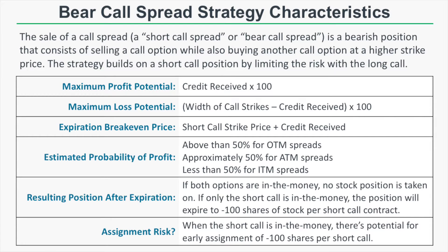After expiration, if both options are in the money, no stock position is taken because the assignment of the short call and the exercise of the long call both offset. Essentially, the short call spread just expires to its intrinsic value and no stock position is taken. However, if only the short call is in the money at expiration, the position will expire to negative 100 shares of stock per short call contract.